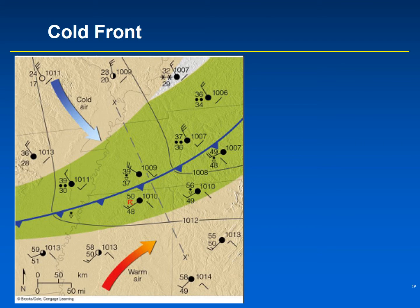This figure shows a cold front on a surface weather map with weather observations in the vicinity of the cold front and further away from it. The circles show cloud coverage — if the circle is filled in, it means the sky is overcast. The lines with the tails are wind barbs showing wind direction and speed. The tail — the end of the barb — shows you the direction the wind's coming from.